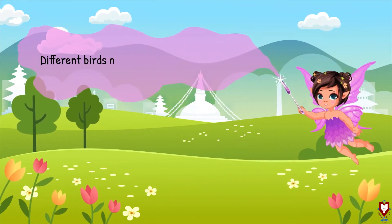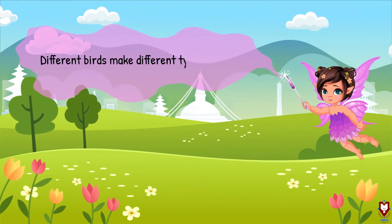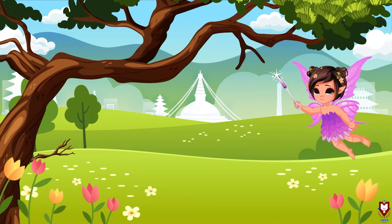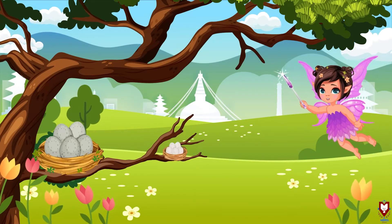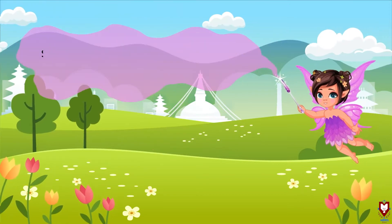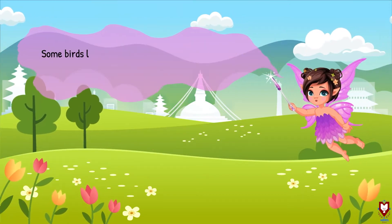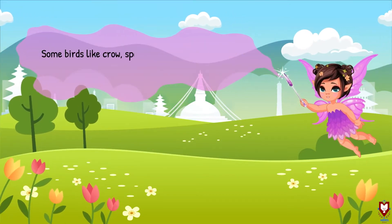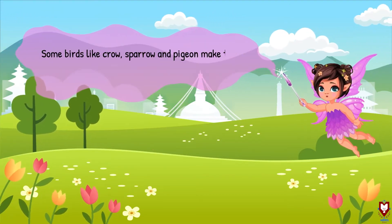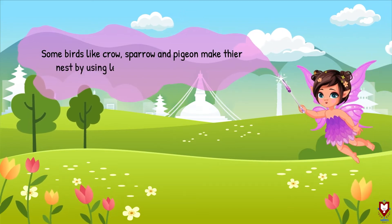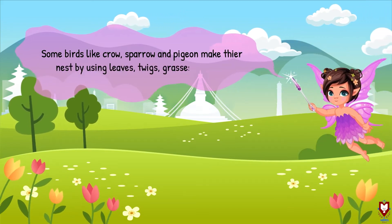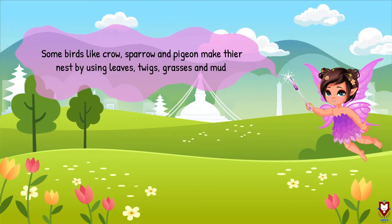Different birds make different types of nests. Some birds like crow, sparrow and pigeon make their nest by using leaves, twigs, grasses and mud.